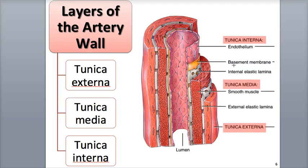The internal elastic lamina is the outermost layer of the tunica interna, which consists of a thin layer of elastic fibers perforated with small openings. It looks like Swiss cheese in the diagram. This layer allows chemicals to diffuse from the tunica interna to the tunica media.